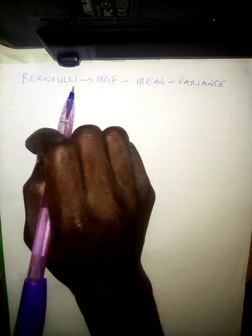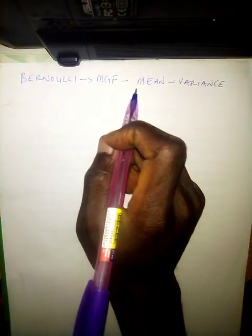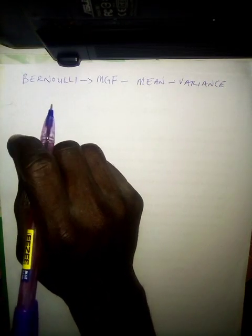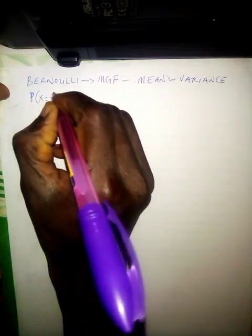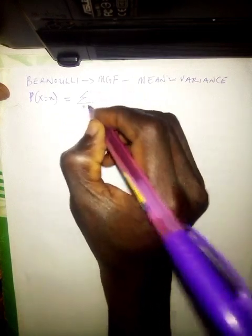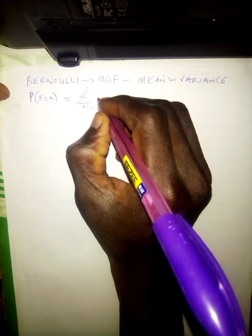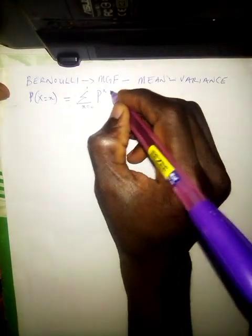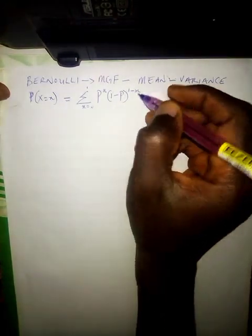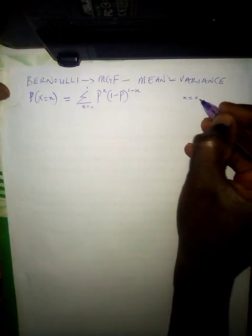Today we'll be looking at a Bernoulli distribution. We are going to generate the moment generating function, the mean, and the variance. The Bernoulli distribution is one of the discrete distributions in probability theory. The probability mass function is given as the probability of X equals x, summed from x = 0 to 1: p^x multiplied by (1 minus p)^(1 minus x), where x runs from 0 and 1.